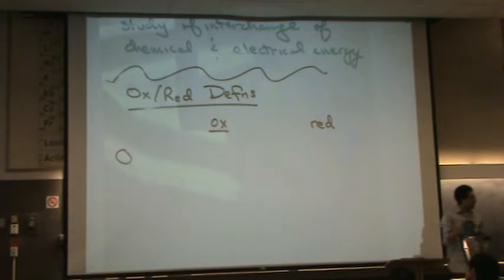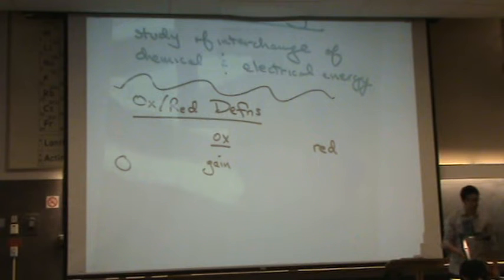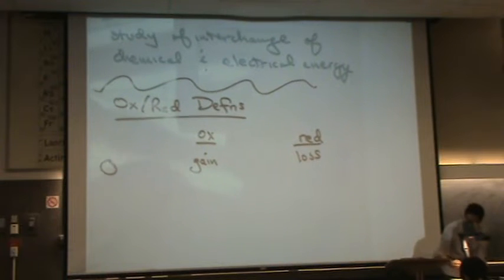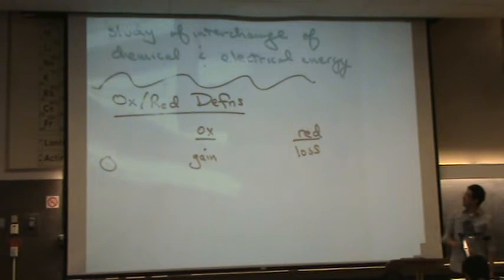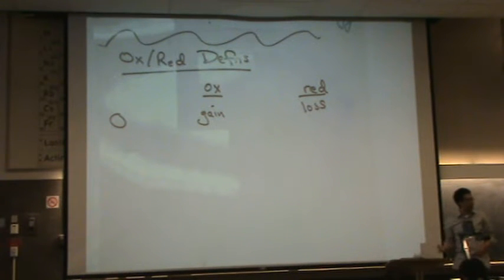First of all, if you have oxygens, and there is a gain of oxygens, that's oxidation. If you have a loss of oxygens, that's a reduction. So more oxygens in the products, you've got an oxidation.